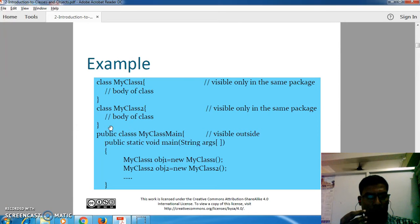Here is an example. All these two, three classes have default visibility and the last one is made public. That means the class MyClassName will be able to access other classes inside the same package. When we go outside, only the class MyClassName will be visible.